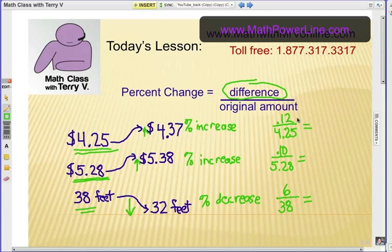So in the first case, it's $0.12 divided by $4.25, the original amount. And you're going to get, on your calculator, 0.0282. Now, I'm just going to carry it out about three or four places, and then we need to move our decimal point over. And that'll give us 2.8 percent, and that's an increase, 2.8 percent.